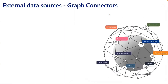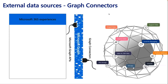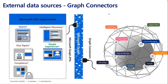For external data sources, similar to what Cloud SSA provided, we have Graph Connectors, which let you bring in content from third-party data sources and plug it into Microsoft Graph. Once the data is in Microsoft Graph, it powers Microsoft Search plus a range of intelligent experiences — some in preview, some rolling out or in development.